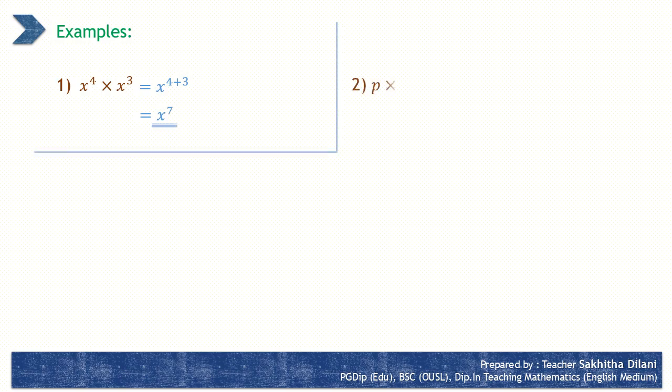The second example: p into p squared into p cubed. In these three powers also, their bases are equal, so you can add the indices. That is, p to the power 1 plus 2 plus 3. After simplifying, the answer is p to the power 6.